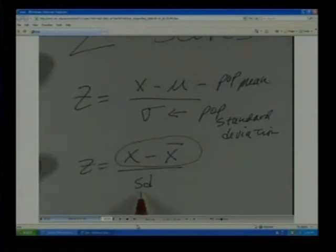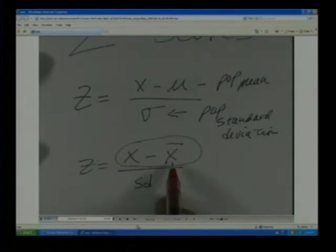This, by dividing by the standard deviation, that normalizes it for the measure of variability, for the spread. So essentially, if X was measured in inches, then the mean would be measured in inches. So the top value here would be measured in inches, and then the standard deviation would also be measured in inches. The variance would be measured in inches squared.